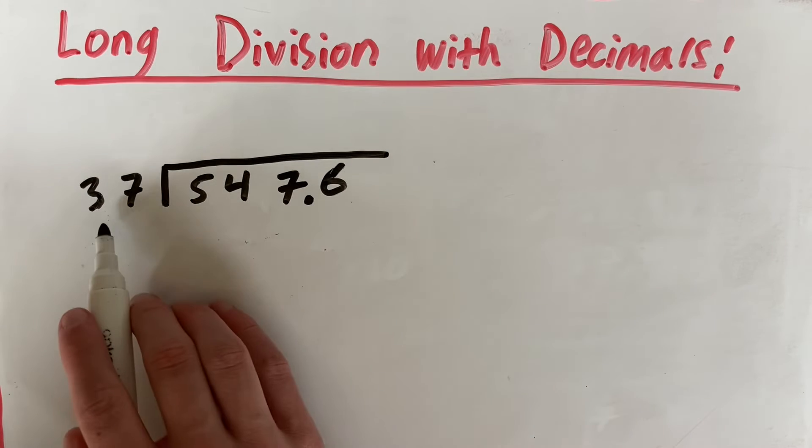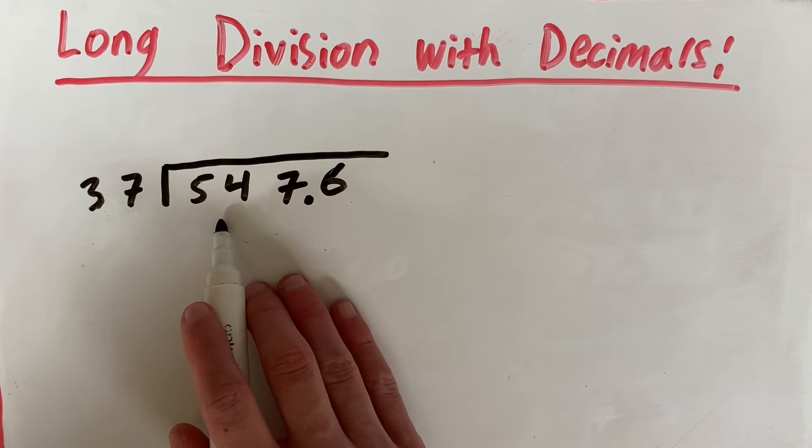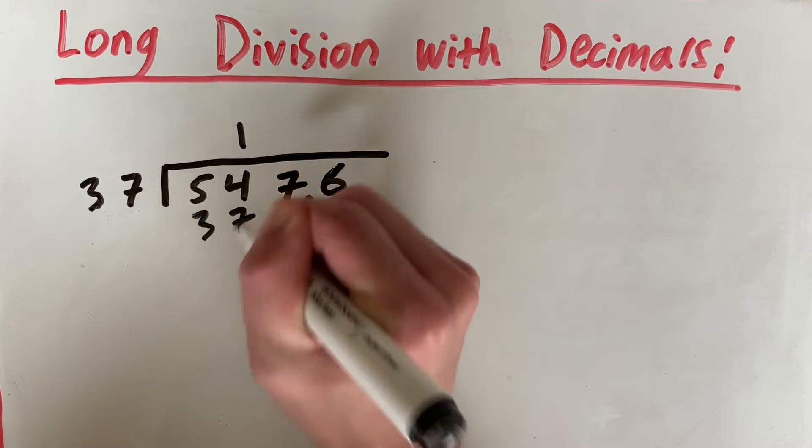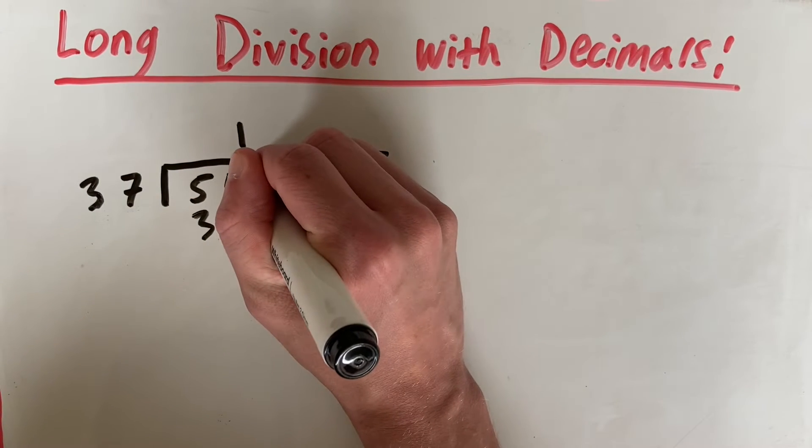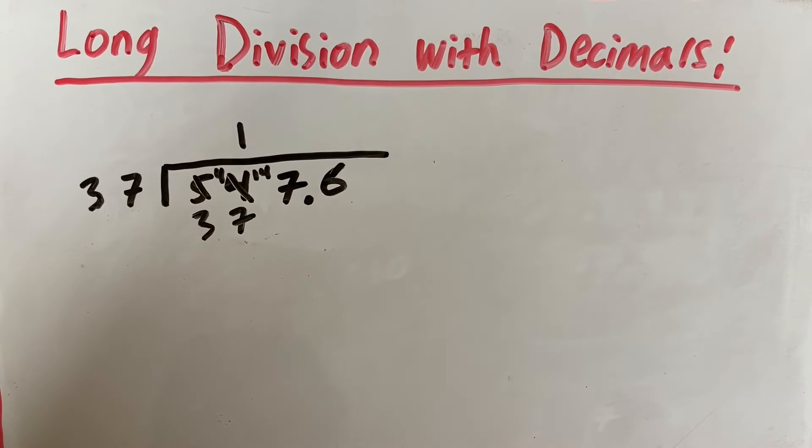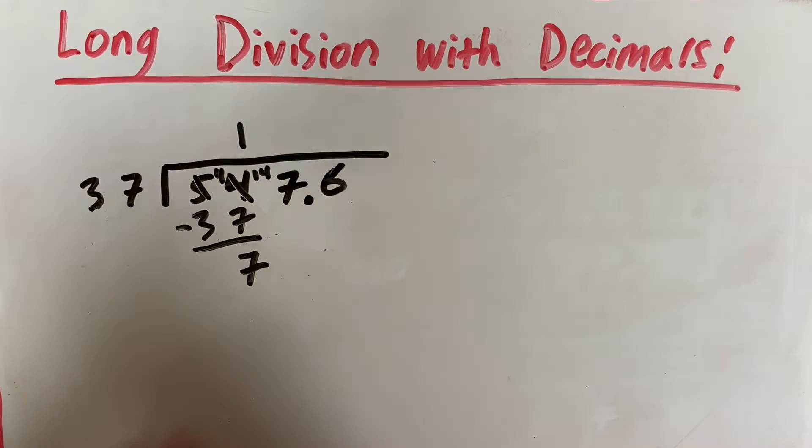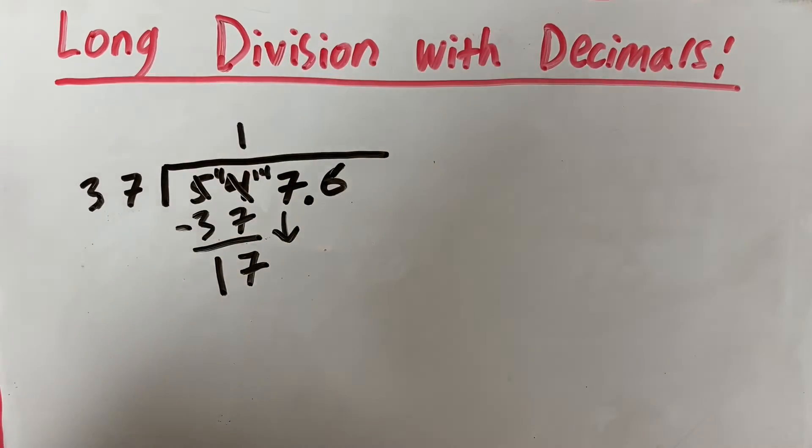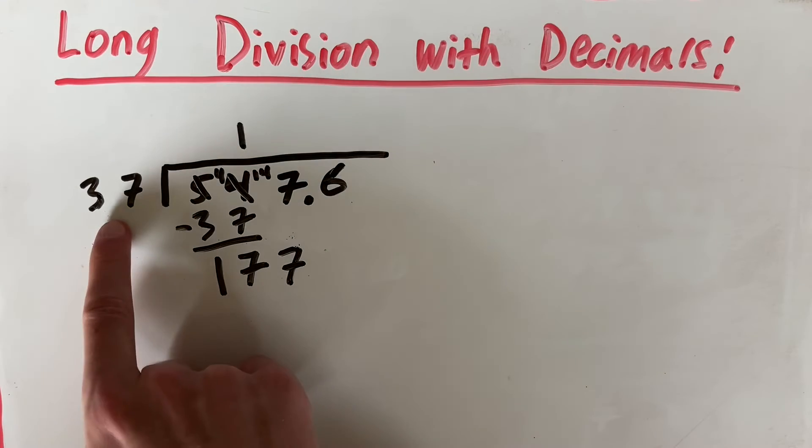So if we look how many times 37 goes into 5, it's 0. But 37 goes into 54 once. So 37 times 1 is 37. And now we do 54 minus 37. So 4 minus 7 doesn't work. So if we make that 14 and take 1 from 5, we get 14 minus 7, which is 7. And 4 minus 3, which is 1. So now we have 17 and we have to bring down our next number, which is 7. That makes our number down here 177.